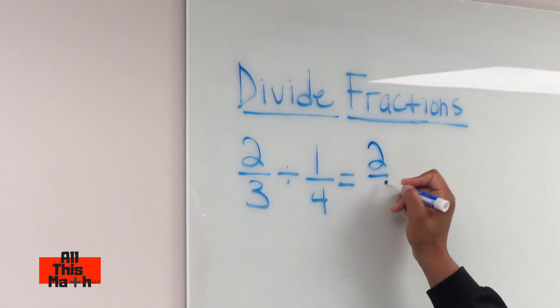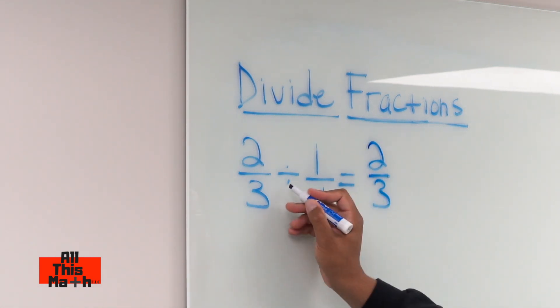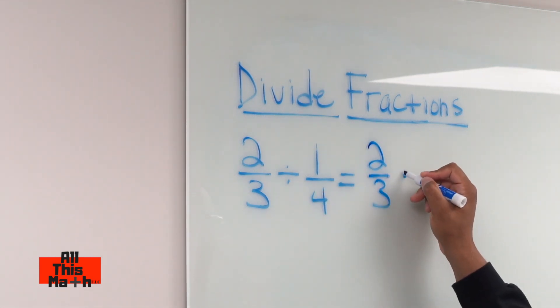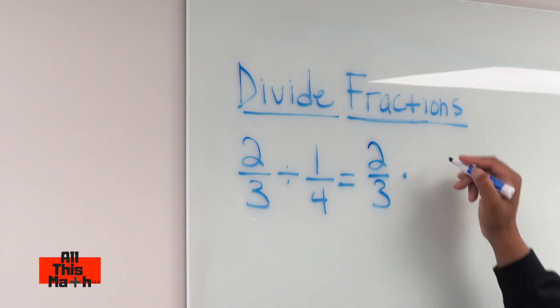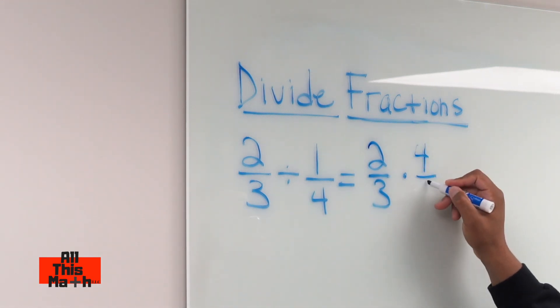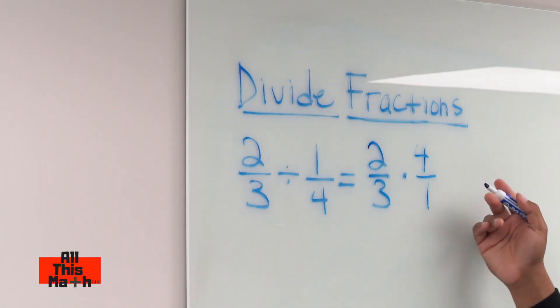So we keep the two-thirds the same. We change the division sign into a multiplication sign. Notice how you use the dot. You can use the x if you want to for multiplication but sometimes we can use a dot. So we flip the one-fourth and change that into four over one or four-firsts and now we can multiply.